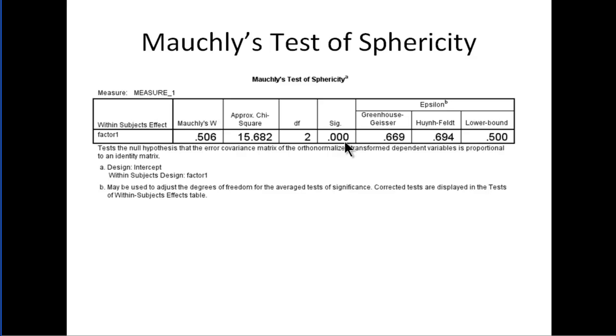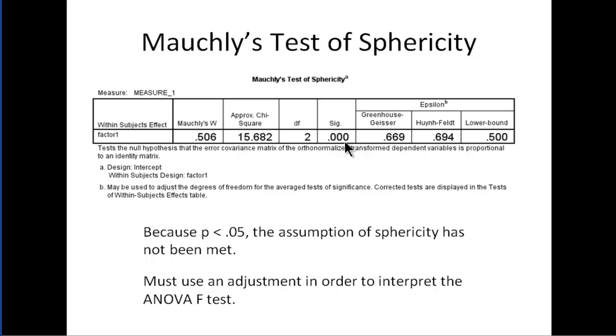Because I want sphericity to be satisfied. But in this case here, because p is less than 0.05, the assumption of sphericity has not been met. So I must make an adjustment in order to interpret the ANOVA F test.